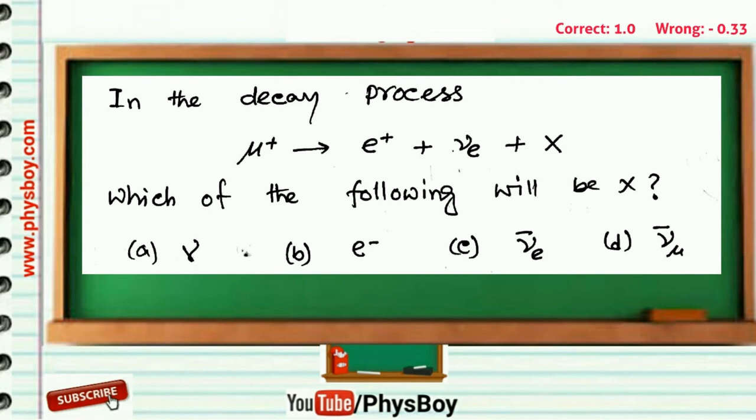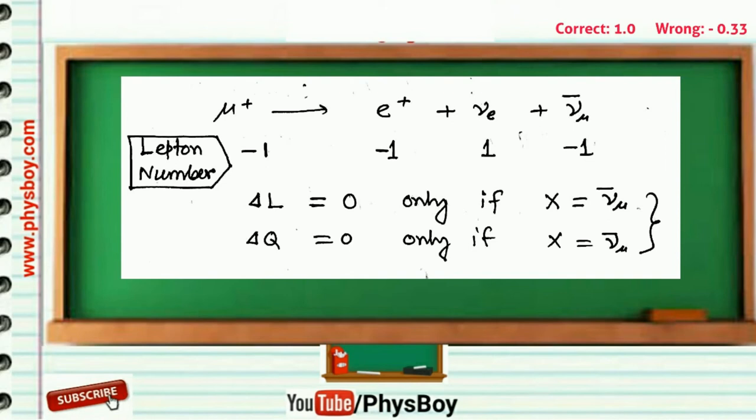In this problem, you have to check which of the given alternatives will satisfy the lepton number conservation and charge conservation. The particle will be anti-muonic neutrino, that is option D. Option D will satisfy both conservation laws, so option D is the correct answer.